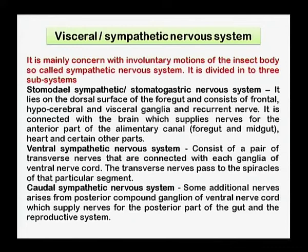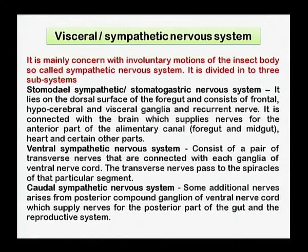The first subsystem is the stomodial sympathetic or stomatogastric nervous system, which lies on the dorsal surface of the foregut and is made up of the frontal, hypo-cerebral, and visceral ganglia. The second is the ventral sympathetic nervous system, consisting of a pair of transverse nerves connected with each ganglion of the ventral nerve cord. In addition, some nerves arise from the posterior compound ganglia of the ventral nerve cord to supply nerves to the posterior part of the gut and the reproductive system — this is the caudal sympathetic nervous system.